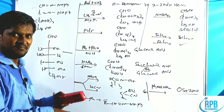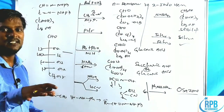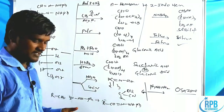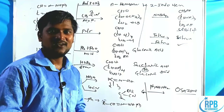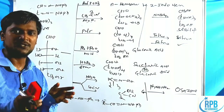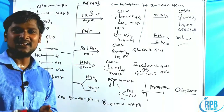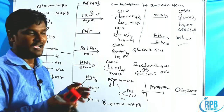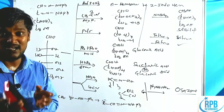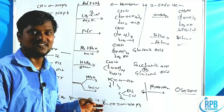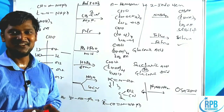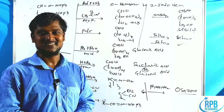These are the key reactions for the structural elucidation of glucose. In the next session, I will discuss cyclic structures, anomeric structures, and the alpha and beta forms of cyclic glucose. Thank you so much for watching.